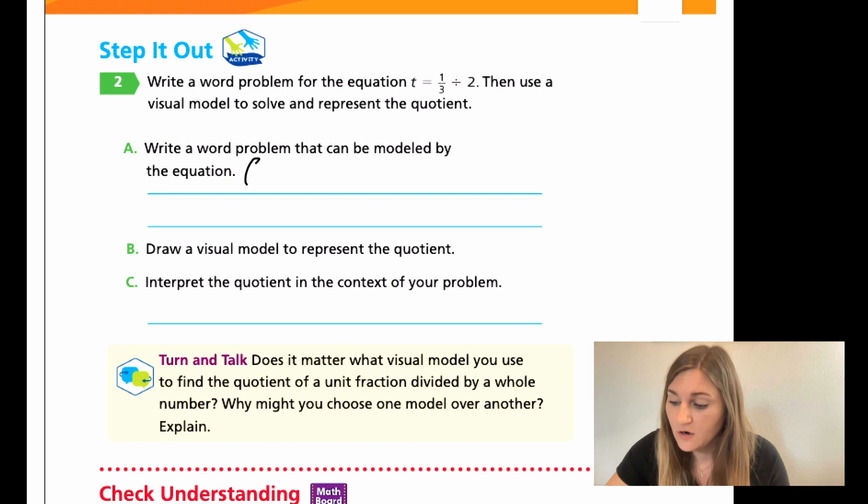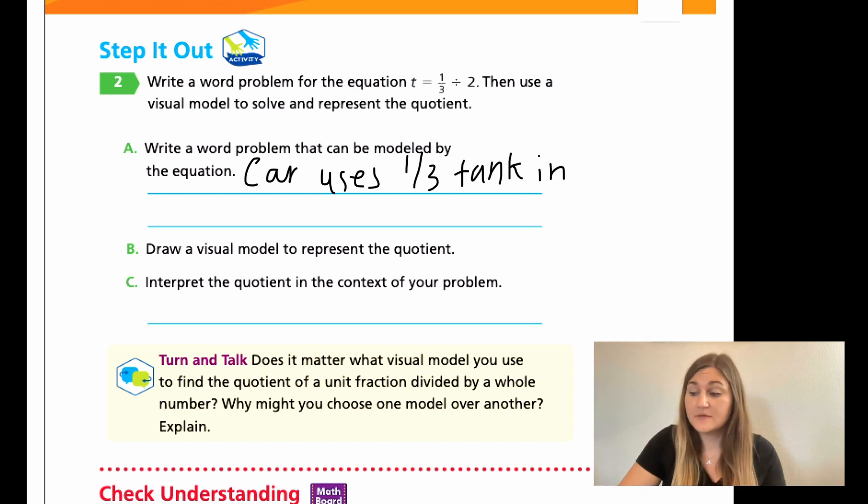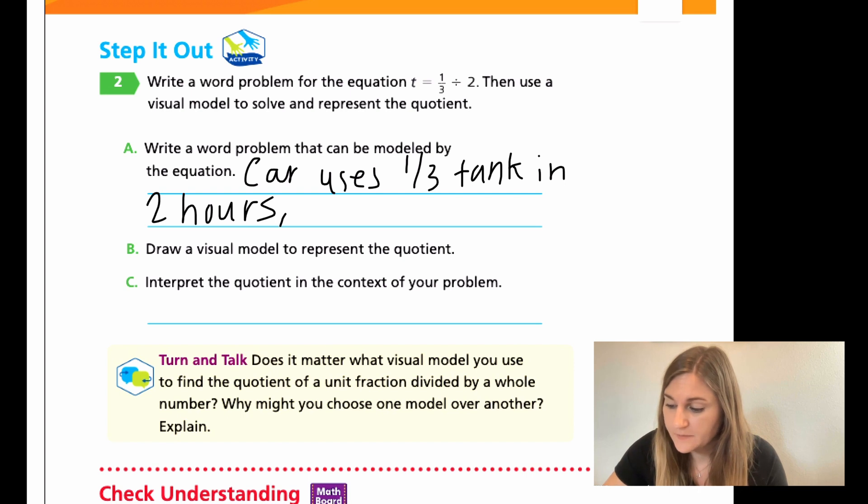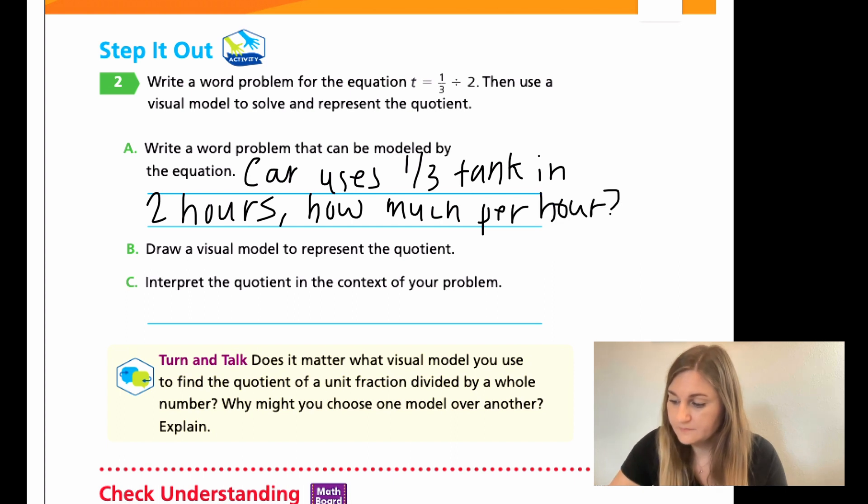So, I said, and I, again, don't have very much room. But if a car uses one-third of a tank, and then I put the two as time. So, I put in two hours. How much is used per hour? How much per hour?